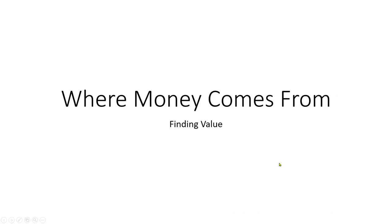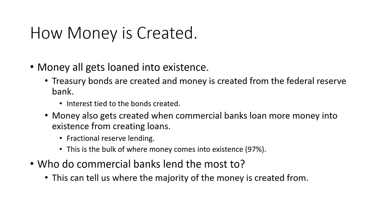I've got this presentation I threw together called 'Where Money Comes From.' This is how money is created — this is your M2 money supply. All of the money gets loaned into existence. There are two ways money can come about. The first way is when treasury bonds are created and money is created from the Federal Reserve Bank. The treasury creates a bond, the Fed creates money, and there's an exchange between the bonds and the money. There's interest tied to those bonds.